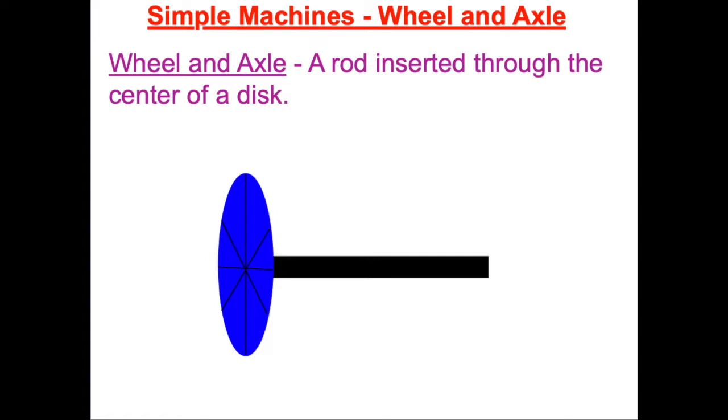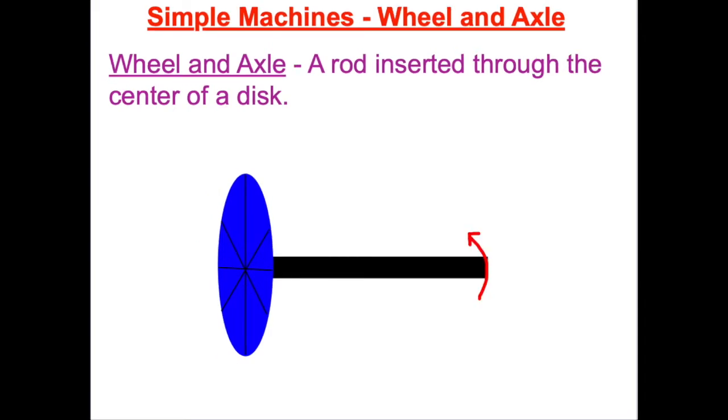The diameter of the axle is always less than the diameter of the wheel. When a force is applied to the wheel to make it spin, the axle also spins because they're connected. You can also apply a force to the axle and make the wheel spin.